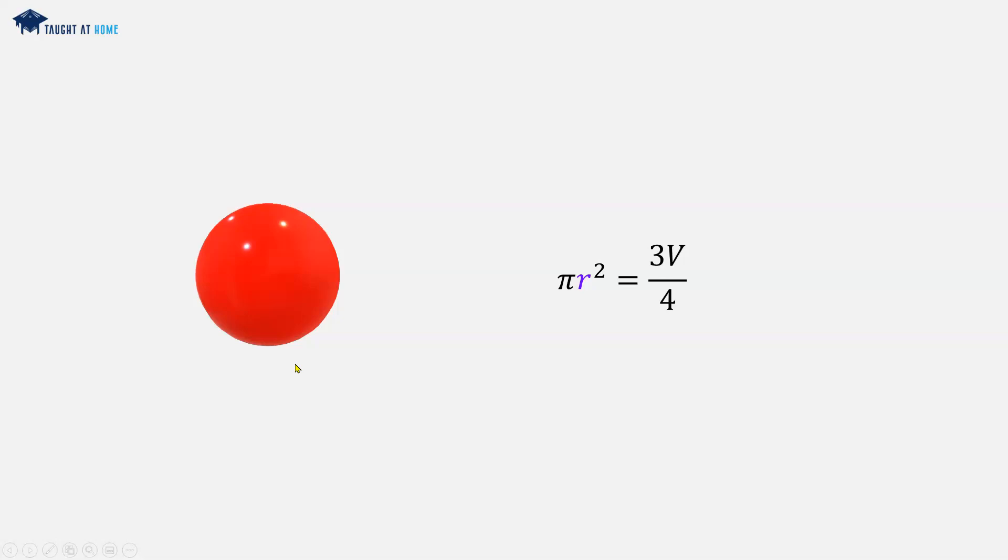Now we can divide both sides by pi to remove pi from the left hand term. Now these cancel out. And we're left with r squared is equal to 3 v over 4 pi on the right hand side.